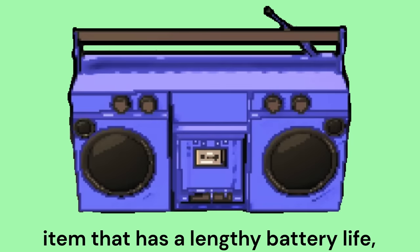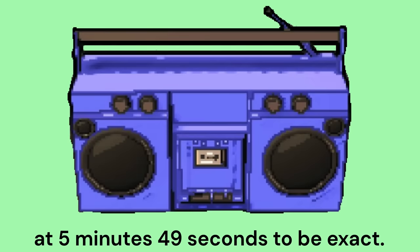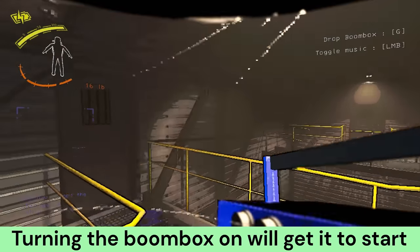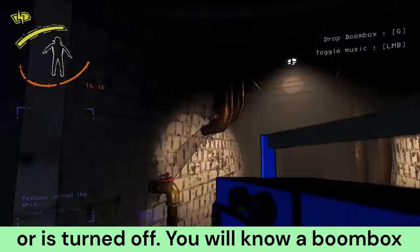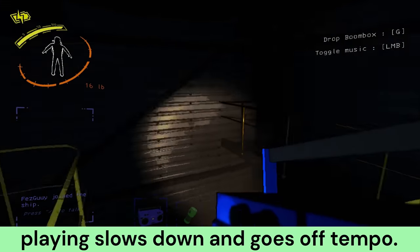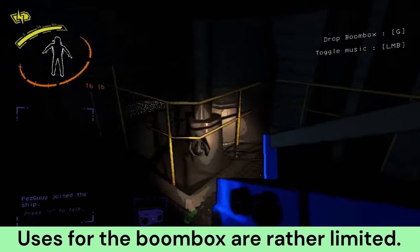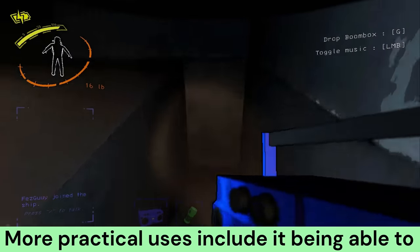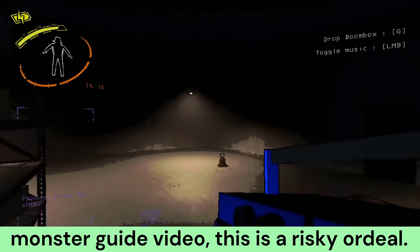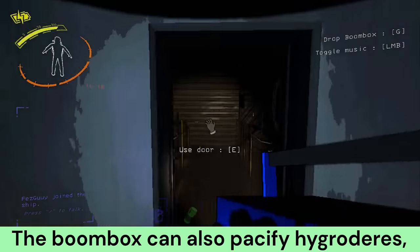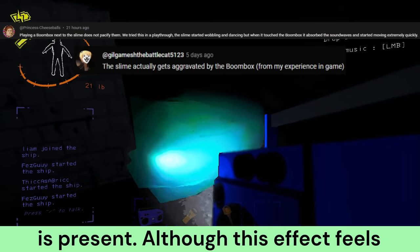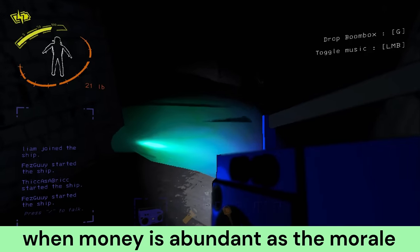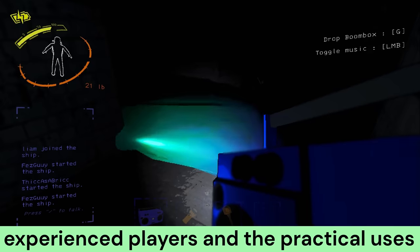The boombox is another battery-powered item that has a lengthy battery life, with it being just under 6 minutes. It costs $60 and weighs 16 pounds. Turning the boombox on will get it to start playing a random song from a pool. Uses for the boombox are rather limited. It does provide morale to a team. More practical uses include it being able to lure eyeless dogs, but as I stated in my monster guide video, this is a risky ordeal.